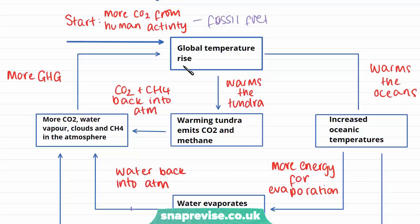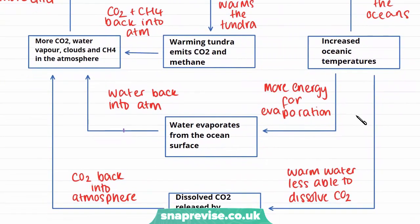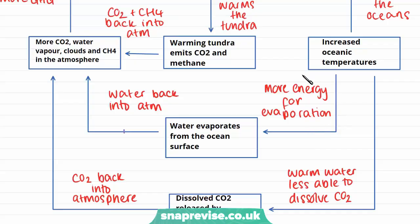The initial impact is that this is going to cause a global temperature rise, and this is going to have two impacts. Firstly, it's going to warm the oceans. When the oceanic temperatures rise, with increased temperatures there is more energy for evaporation — the movement of water from its liquid state to its gaseous state — producing water vapour. So water is evaporating from the surface of the ocean, and water vapour is going back into the atmosphere.